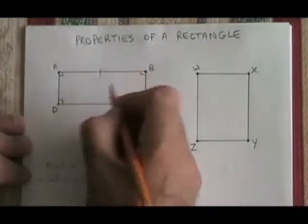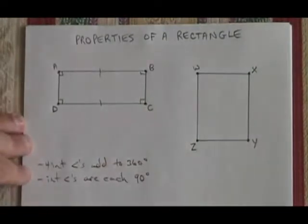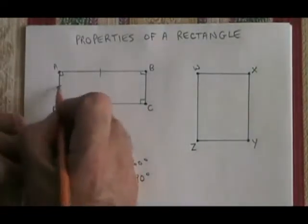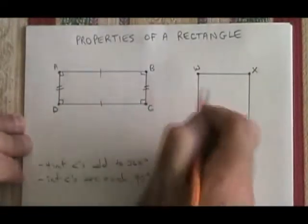These two opposite sides have to be congruent and parallel, and these other two opposite sides have to be congruent and parallel.